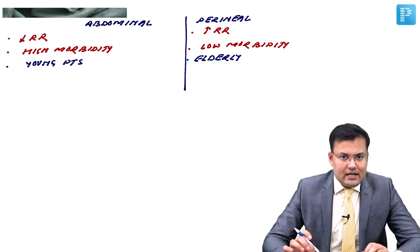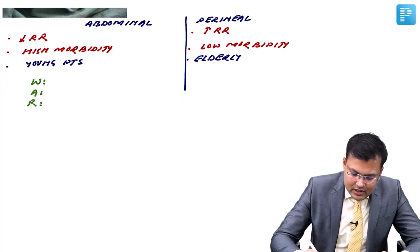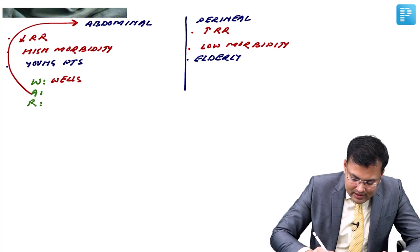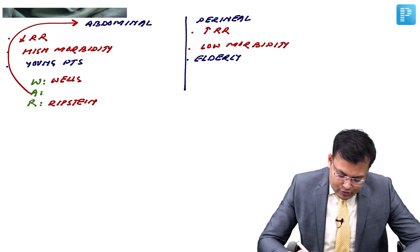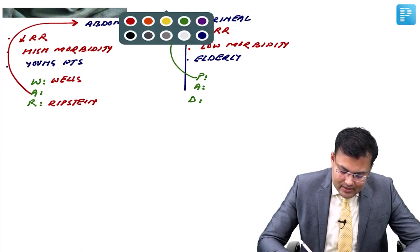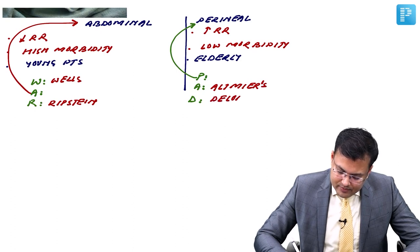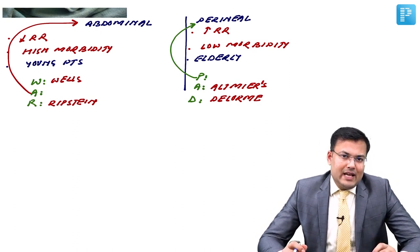There are named surgeries asked in exams. The mnemonic for abdominal approach is WAR: W means Wells, A means abdominal, R means Ripstein. For the perineal approach, the mnemonic is PAD: P means perineal, A means Altemeier, D means Delorme.